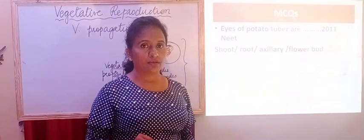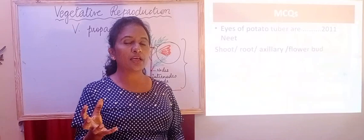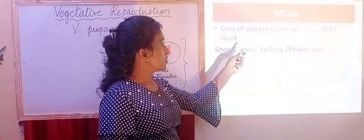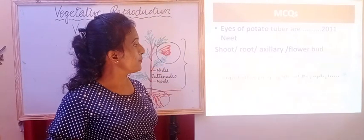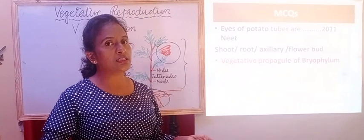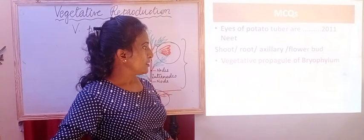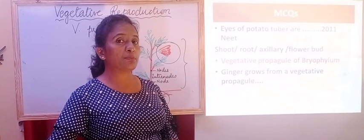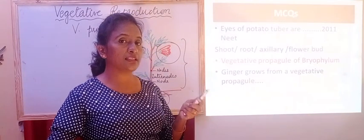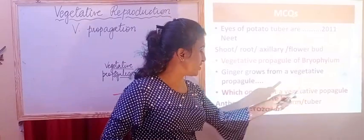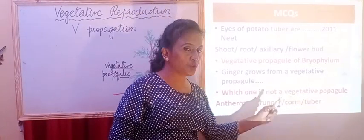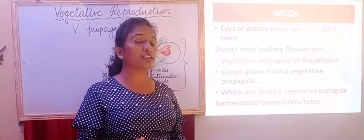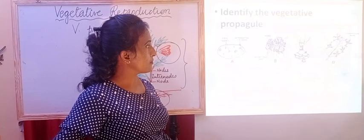Let's go to MCQs. Eyes of potato tuber are — we know potato is a stem part and is a tuber, so the buds which give rise to new plants are shoot buds. Vegetative propagule of Bryophyllum is the leaf — the margin which gives rise to leaf buds. Ginger grows from a vegetative propagule — ginger is a rhizome, with two other examples being banana and turmeric. Which one is not a vegetative propagule? Antherozoid, runner, corm, or tuber. Runner, corm, and tuber are vegetative propagules. Antherozoid is not, because it comes under sexual reproduction — it is the male reproductive part.